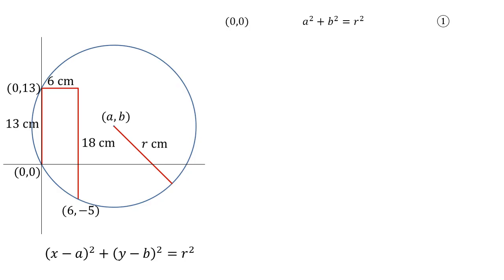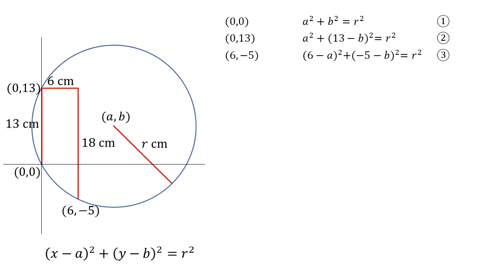We can then put (0, 13) in, so we get a² + (13 - b)² = r². I'm going to call that equation 2. And our last point (6, -5) gives us (6 - a)² + (-5 - b)² = r², and we're going to call that equation 3.